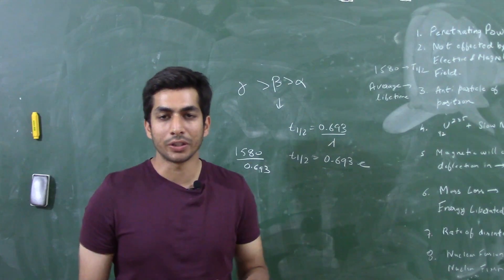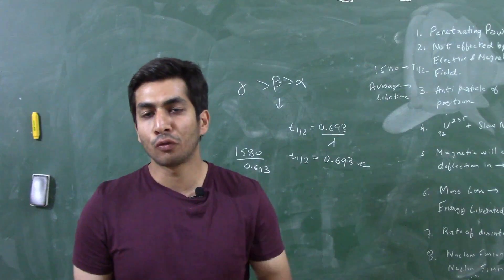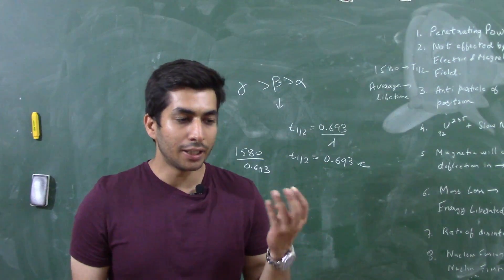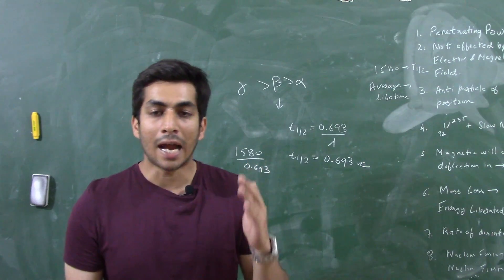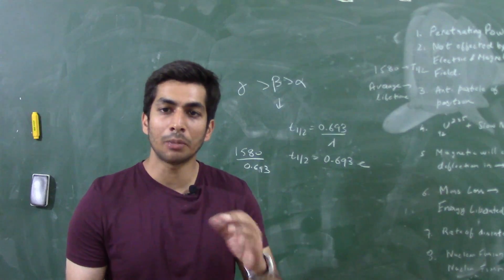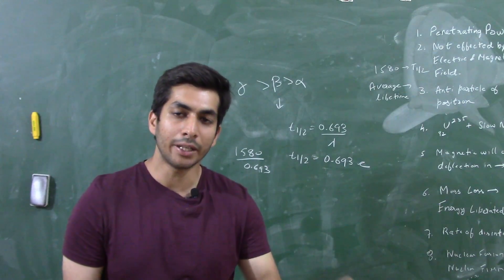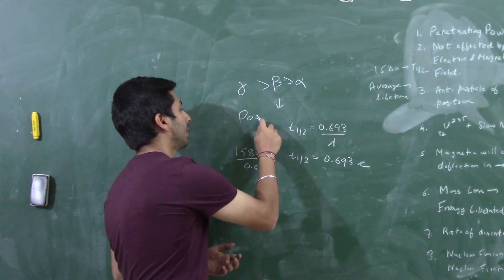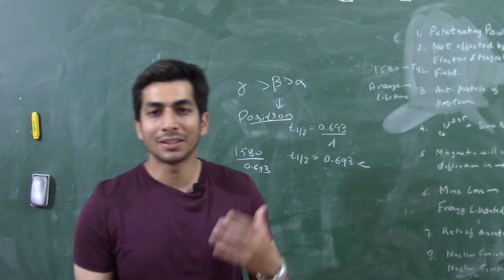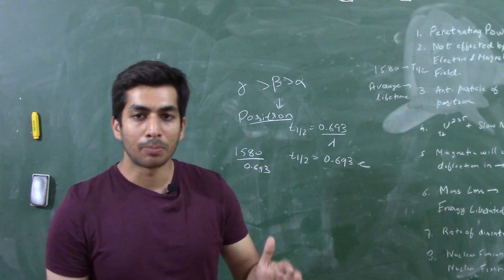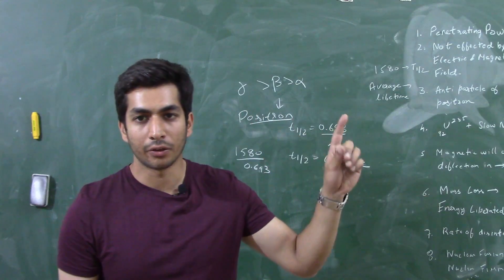The next question: what is the anti-particle of a positron, or what is the anti-particle of an electron? They might give four options — photon, proton, neutron, and positron. The anti-particle of an electron is a positron: it's the same particle but with opposite charge. An electron has negative charge while a positron has positive charge. Similarly, the anti-particle of a positron is an electron. I have two lectures on nuclear chemistry where I've discussed what a positron is and when positron emission (beta-plus decay) versus electron emission (beta-minus decay) occurs.